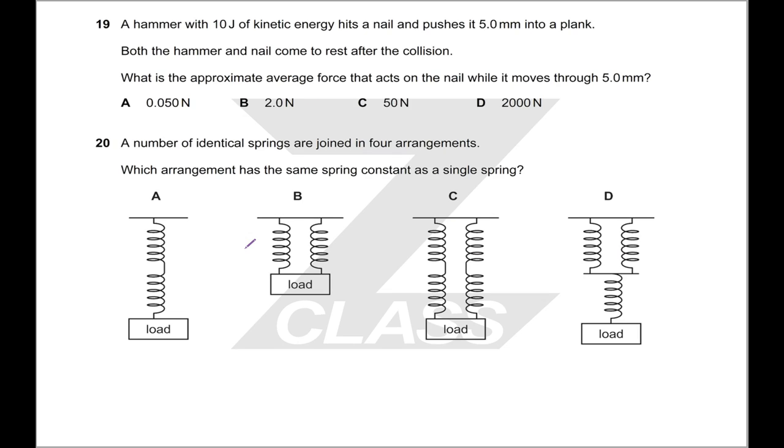A hammer with 10 joules of kinetic energy hits a nail and pushes it five millimeters into a plank. The hammer and nail both come to rest after the collision. What is the approximate average force that acts on the nail while it moves through five millimeters? So this is work done is equal to force times the distance. In this case we know the work done because we've used up 10 joules of energy. When we're at rest afterwards there is no kinetic energy, so all of that energy has been used up. We know the work done, we know the distance, we can get an average force. The average force is just assuming that your force has been the same all the way through. That's what that means.